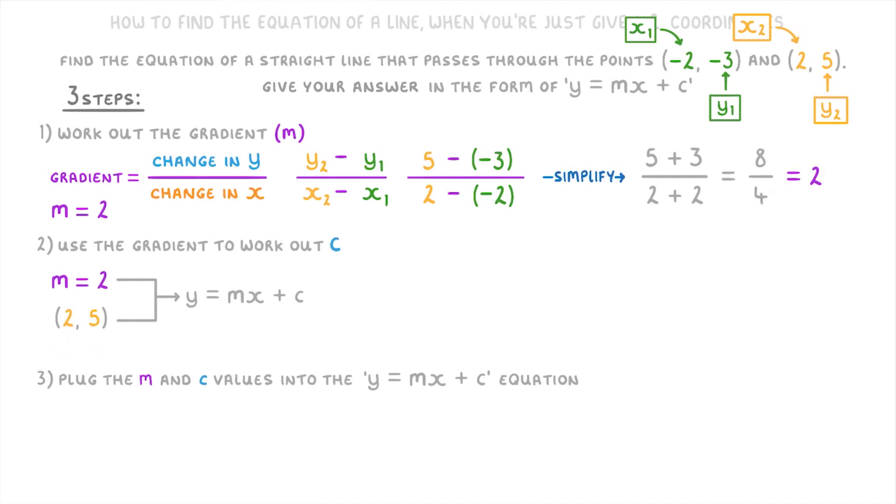So if we plug these x and y values along with our m = 2 into the y = mx + c equation we'll have 5 = 2 × 2 + c, which simplifies to 5 = 4 + c. So if we subtract 4 from both sides we'll find that 1 = c, so our c value is 1.